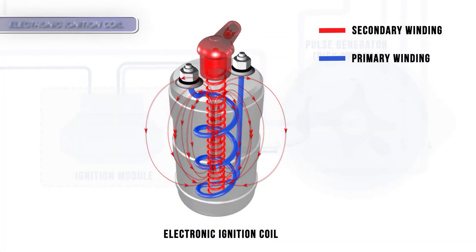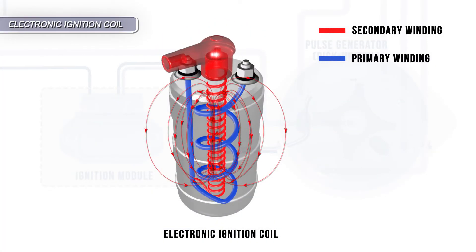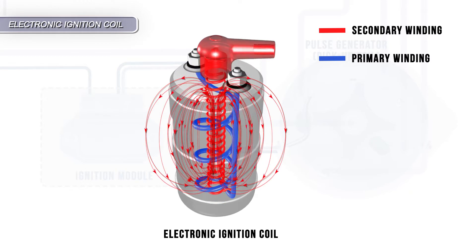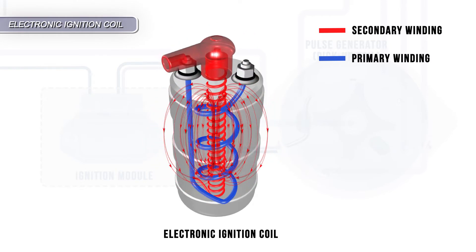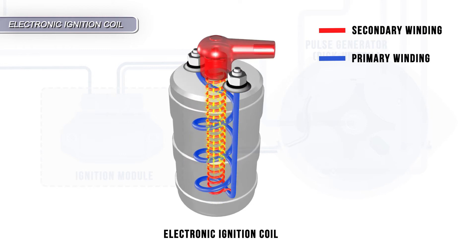The electronic ignition coil operates with the same principles as a conventional coil. A collapsing magnetic field induces current flow in a second winding.